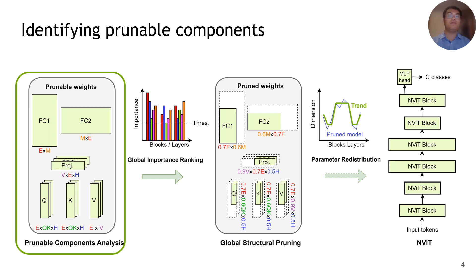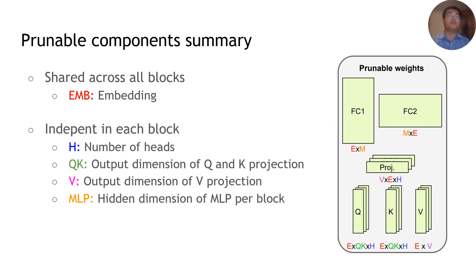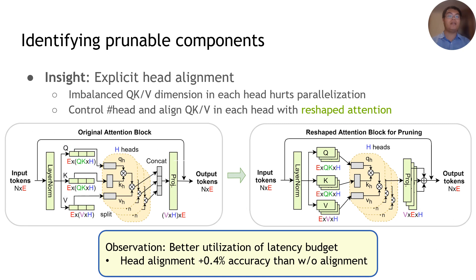To achieve this goal, we first identify all prunable components that can be independently controlled in the vision transformer model, which includes the embedding size, number of heads, QK projection and V projection dimension of each head, and the hidden dimension of the multilayer perceptron. A specific insight we have is to explicitly align the QK and V dimension of each head by reshaping the trainable parameters in the pruning process. This enables better parallelism in the pruned model and enables up to 0.4% higher accuracy under the same budget.